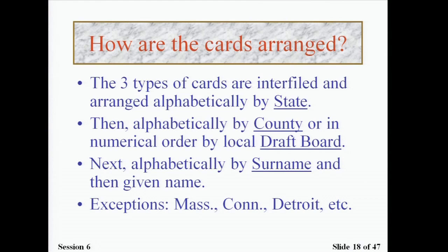The cards are arranged so that all three card types are included in one box. Cards are filed alphabetically by state, then alphabetically by county, then in numerical order by local draft board, then alphabetically by surname, and then by given name. The exceptions are larger cities like Massachusetts, Connecticut, and New York, where there was more than one draft board for a particular area.